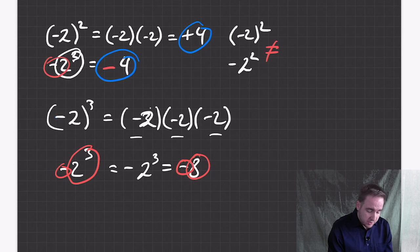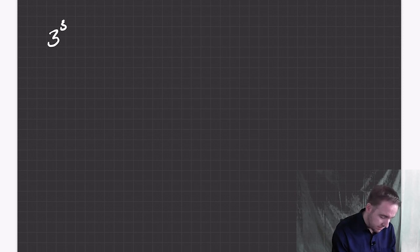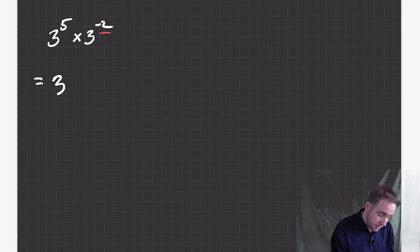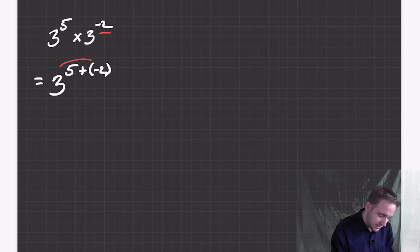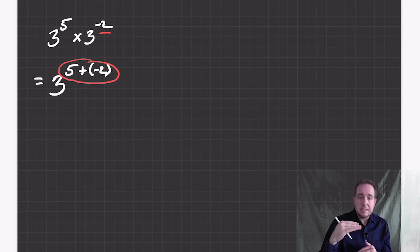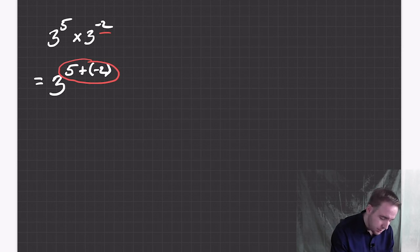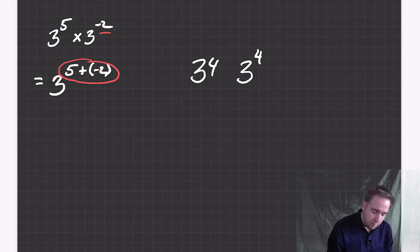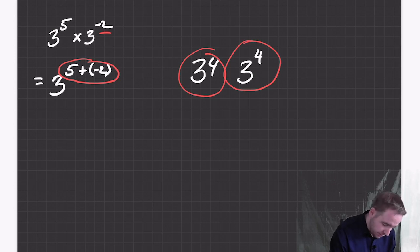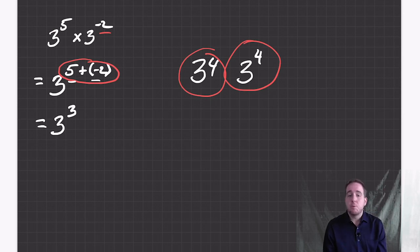Now you're ready to do just about everything. All of the old laws still work. So if you have three to the five times three to the negative two, even though a negative number has shown up, this still has to be three to the five plus negative two. Make sure you write a bit bigger and as clearly as possible, because if you can't tell the difference between 34 and three to the power of four, you're going to get very confused very fast. This works out to five take away two: three to the power of three.